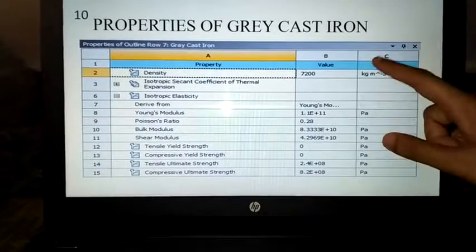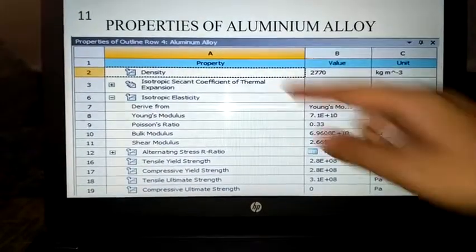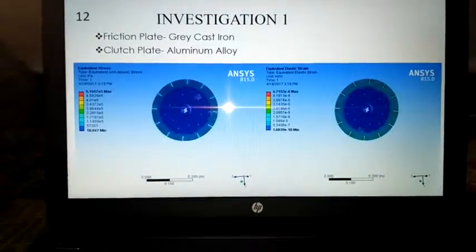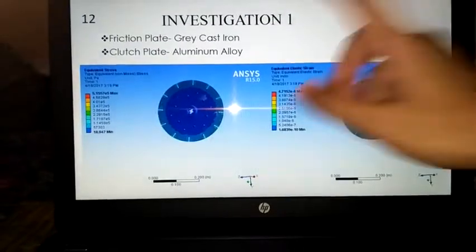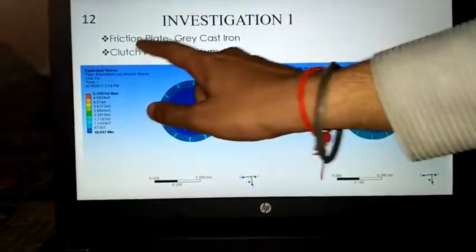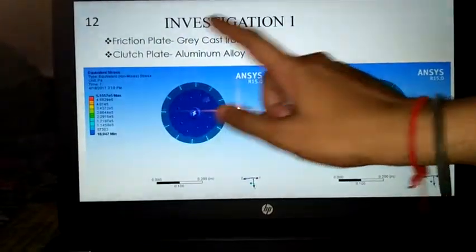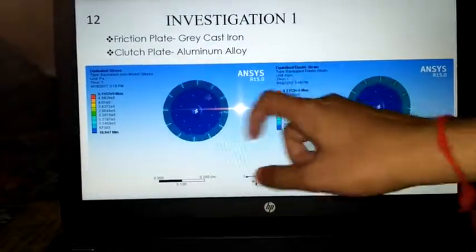These are the properties of grey cast iron, and we noted down the same for aluminum alloy. Our first investigation uses grey cast iron as the friction plate and aluminum alloy as the clutch plate.